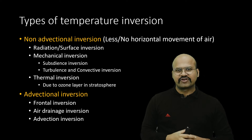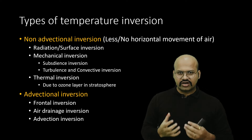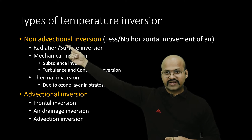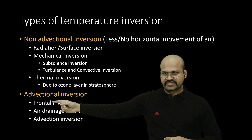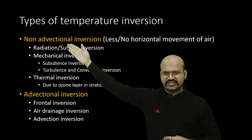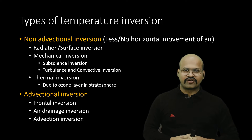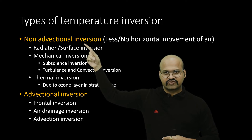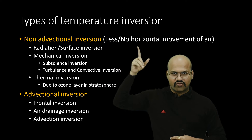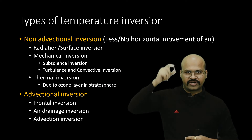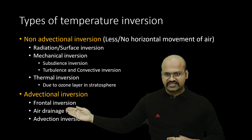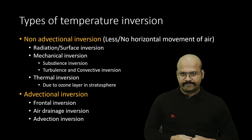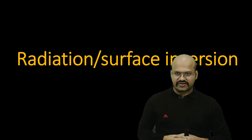There are many types of temperature inversions, broadly classified into two groups: non-advectional inversion and advectional inversion. Advection means horizontal movement of air. Non-advectional inversions do not require horizontal movement of air, while advectional inversions do. Let's look at each type one by one.